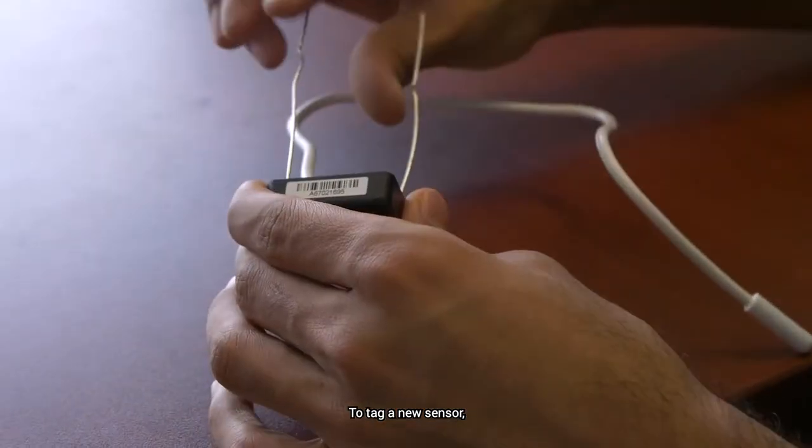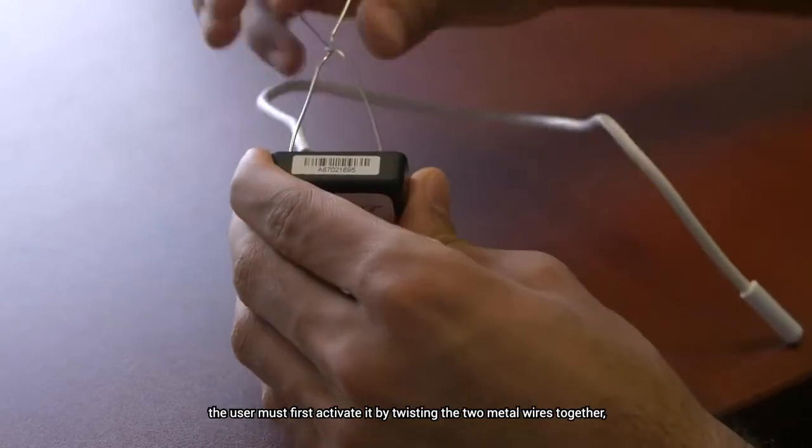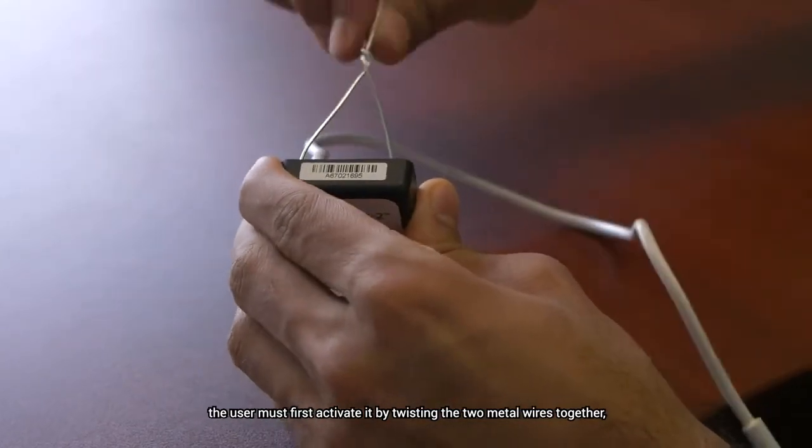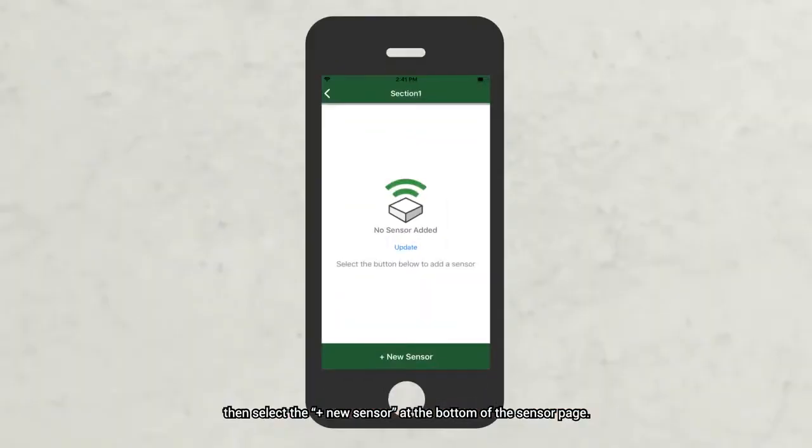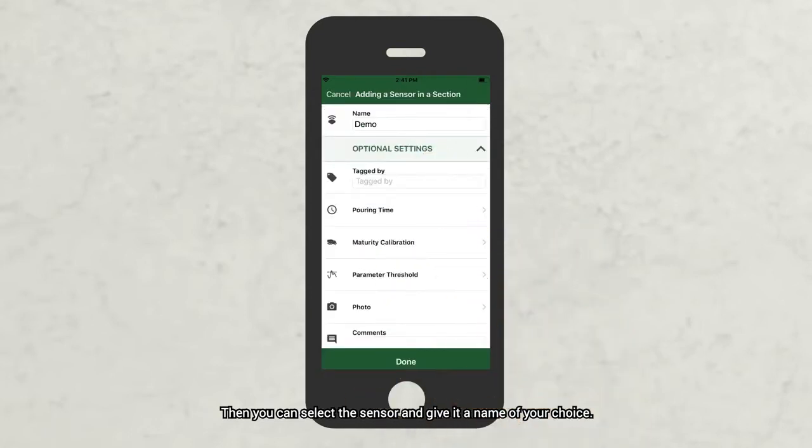To tag a new sensor, the user must first activate it by twisting the two metal wires together, then select new sensor at the bottom of the sensor page. The application will then scan for nearby sensors. Then you can select the sensor and give it a name of your choice.